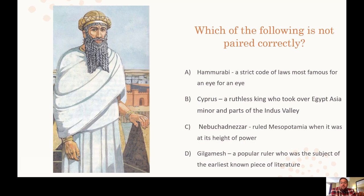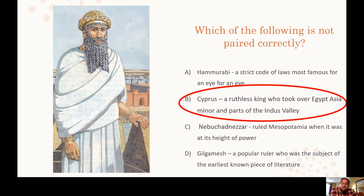Which of the following is not paired correctly? Hammurabi had a strict code of laws most famous for 'an eye for an eye' — that's correct. Cyrus is described as a ruthless king who took over Egypt, Asia Minor, and parts of the Indus Valley, but Cyrus was actually a really kind, tolerant ruler — so that pairing is definitely not correct, making B the answer. Nebuchadnezzar ruled Mesopotamia at the height of its power, and Gilgamesh was a powerful ruler who was the subject of the earliest known piece of literature.